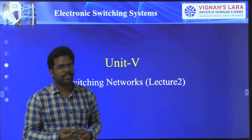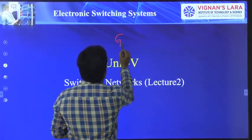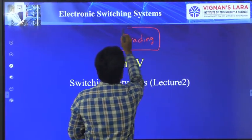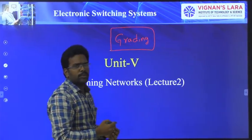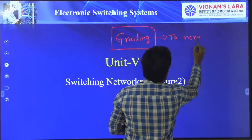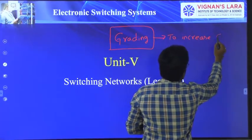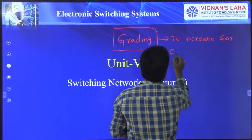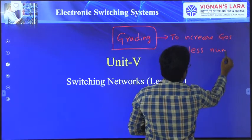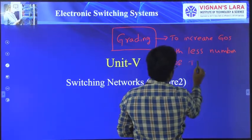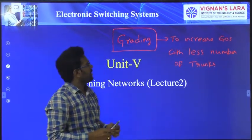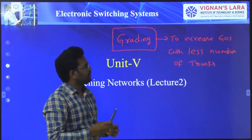Good morning students. In the last class we discussed about grading. Grading means grouping the outlets into groups such that to increase the grade of service with less number of trunks. So the main objective of using grading is to increase the grade of service with less number of trunks.